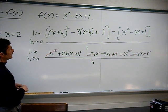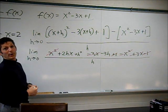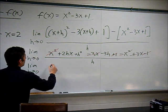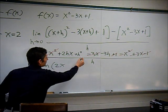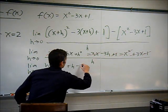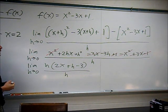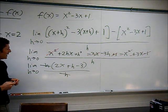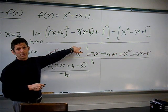Now you can pull out an h — everybody left on top has an h, and that is no accident, that must happen. Limit as h approaches zero, factoring out an h: we get h times 2x plus h minus 3, all over h. Cross the h's out. It's like a removable discontinuity — that's why I can't just stick in 0 for h right away; it would be undefined with 0 on the bottom.